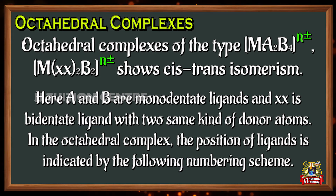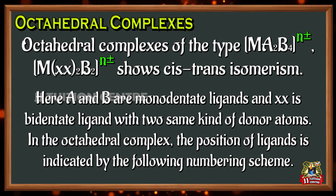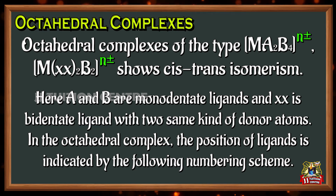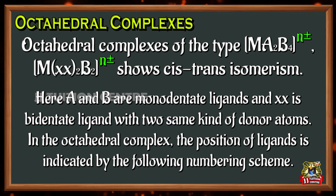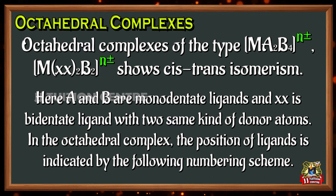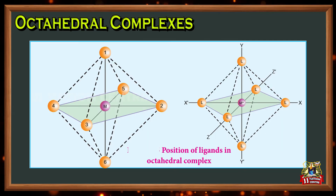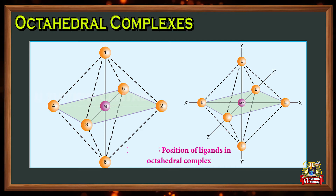Next, octahedral complexes. Octahedral complexes of the type MA₂B₄ and M(XX)₂B₂ show cis-trans isomerism, where A and B are monodentate ligands and XX is a bidentate ligand with two same-kind donor atoms. In octahedral complexes, the position of the ligand is indicated by the following numbering scheme, with positions labeled 1, 2, 3, 4, 5, and 6.